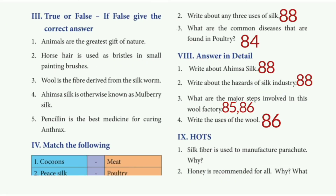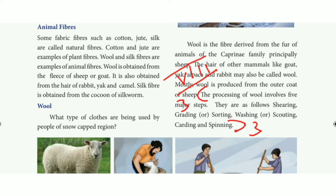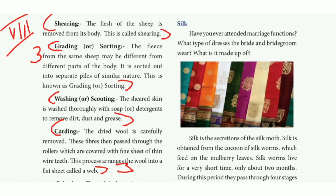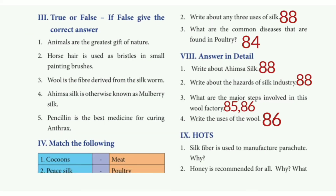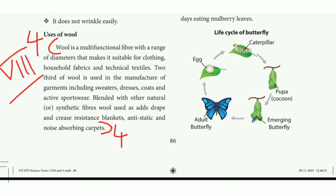Answer in detail. Third question: what are the major steps involved in the wool factory? Refer to page numbers 85 and 86. The paragraph has nine lines — the processing step is in the sixth line, and carding and spinning is the last line. Also refer to the second line on the next page. Washing and combing — this paragraph is for full marks.